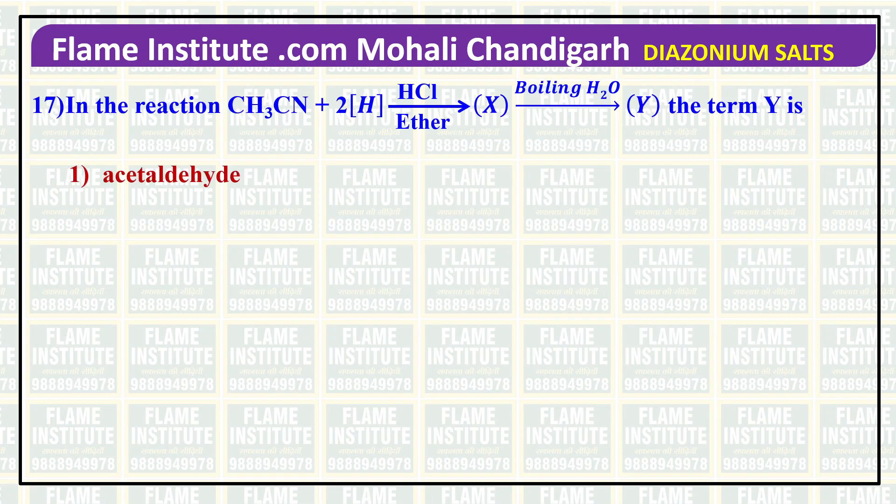In the reaction CH3CN plus 2H, on treatment with HCl and ether, giving you X. X on treatment with boiling water gives Y. The options for Y are: acetaldehyde, ethylamine, acetone, or dimethylamine.